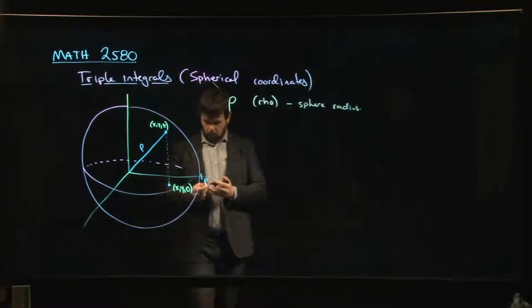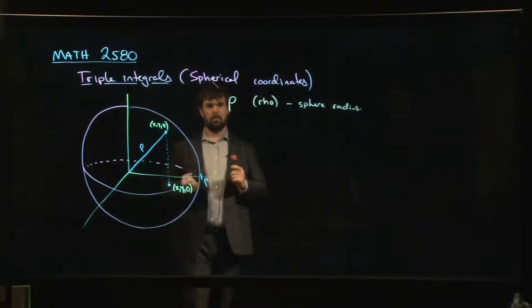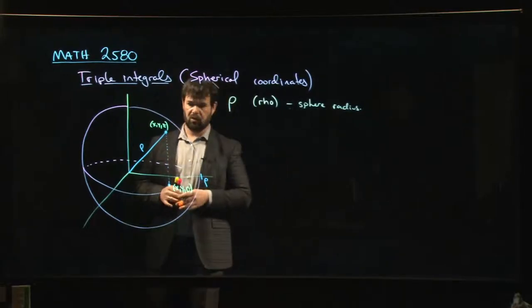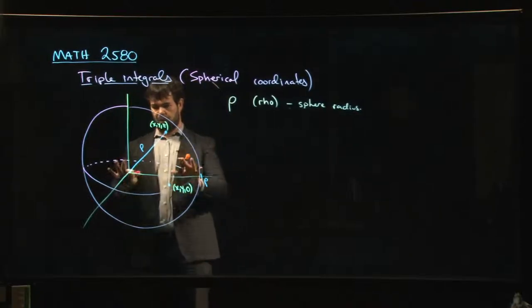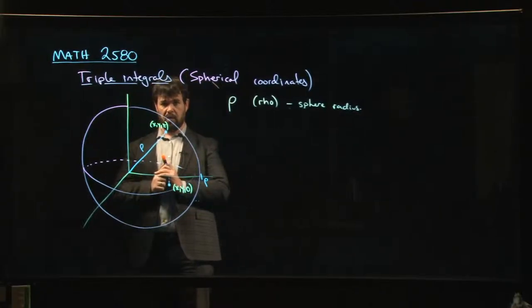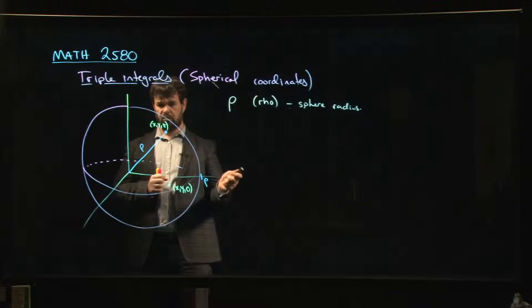Now once you're on a sphere, you need two coordinates to specify your position, right? This is something we know because we live on something pretty close to a sphere. If you want to specify your position on a sphere, you need to know your latitude and your longitude.